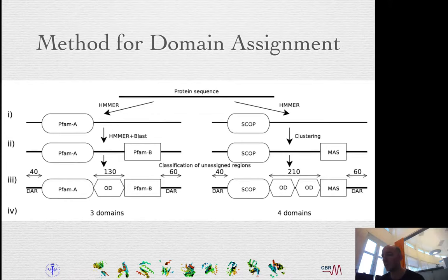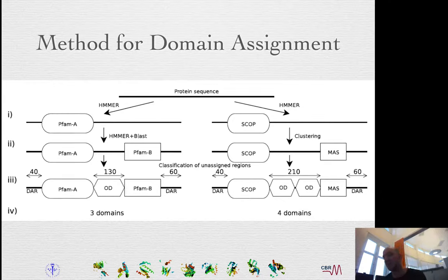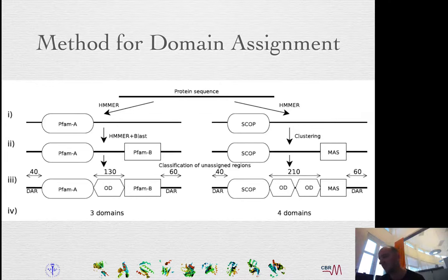Basically both these methods can be used. We can use HMMER, an HMM program, to assign domains to protein sequences. This will cover some part of the sequence, and then we can do something else to analyze the rest. In this case we developed our own database called MAS, which is basically similar to P5M, using a similar approach.